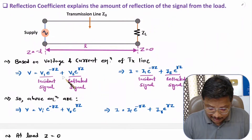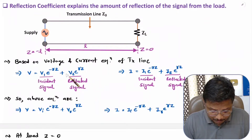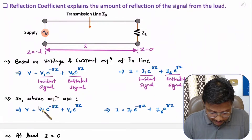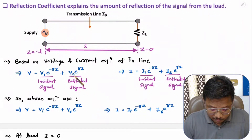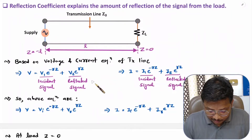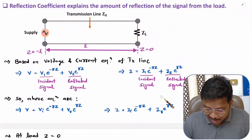Since V1 and I1 correspond to the incident signal, we replace them as V1 equals VI and I1 equals II. And since V2 and I2 correspond to the reflected signal, we replace V2 by VR and I2 by IR.